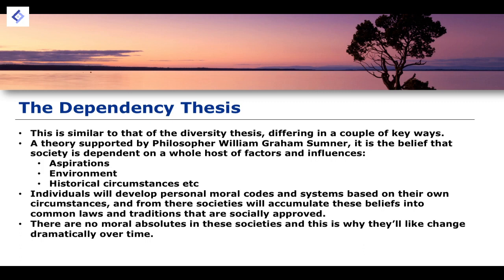This means there are no moral absolutes in these societies, which is why they are likely to change dramatically over time. We can see how this explains how moral values of certain societies have changed — for example, in Great Britain over thousands of years, different moral values have changed dramatically. Slavery was accepted as morally righteous for much of Britain's history and was only outlawed relatively recently. The same can be said for capital punishment and bigoted views such as racism and homophobia. The dependency thesis supports this idea that societies develop and change over time in their moral values, and there are plenty of examples to support it.